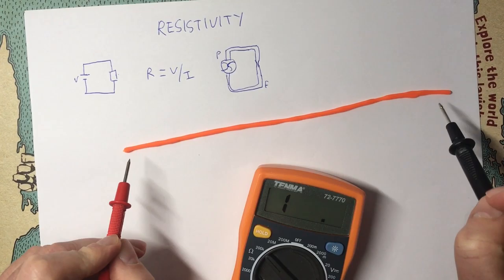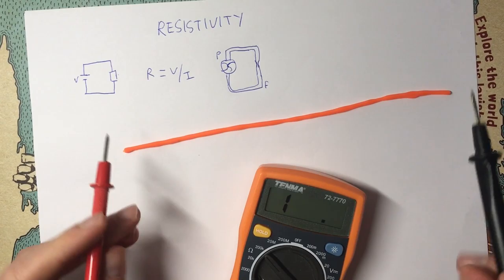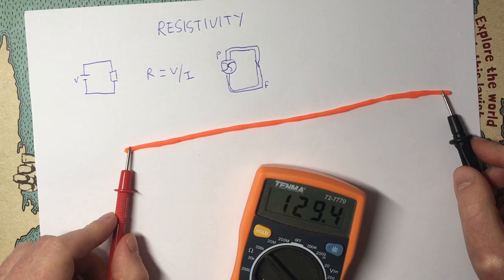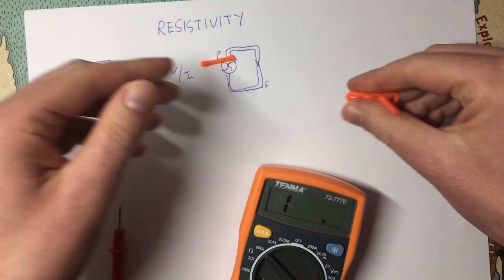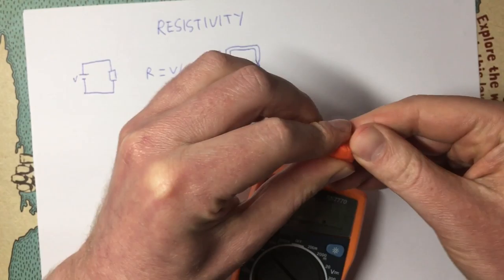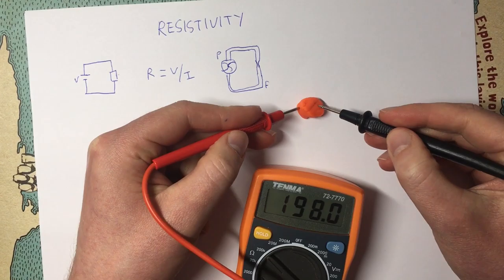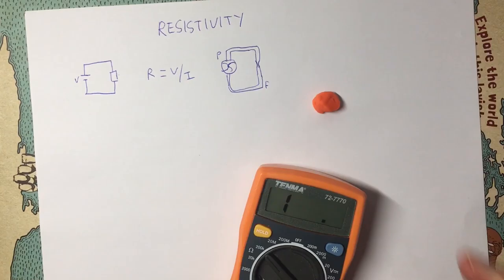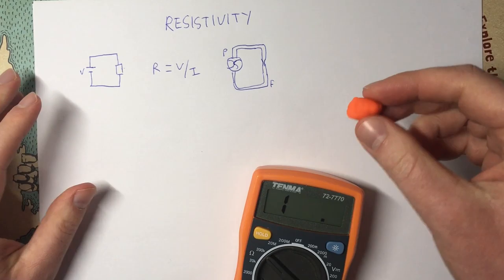What I'm going to show here is that the shape of the material affects its resistance. If we wanted to compare different materials, the shape is important. You can see here — I've rolled this out nice and long and we get a resistance of about 140 kilo-ohms. If I take this same amount of material and scrunch it up, now we're getting about 50 kilo-ohms. So we get quite different resistances depending on the shape.